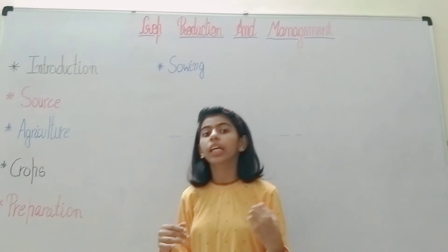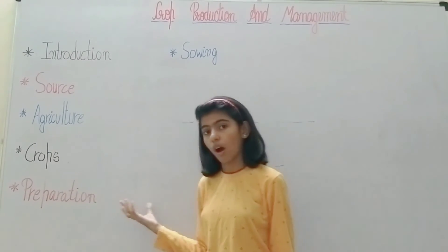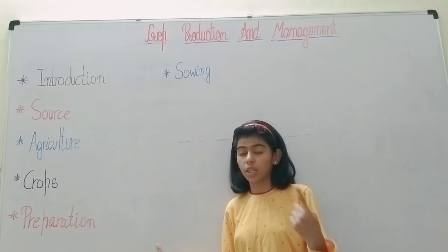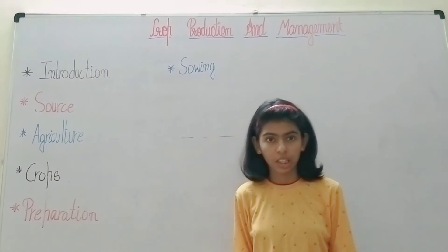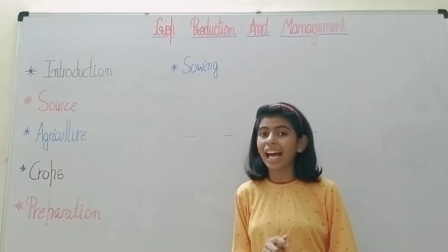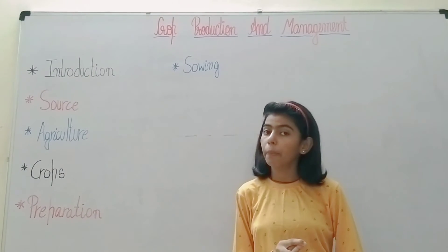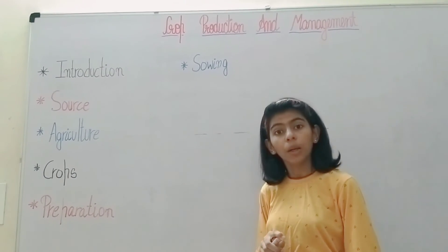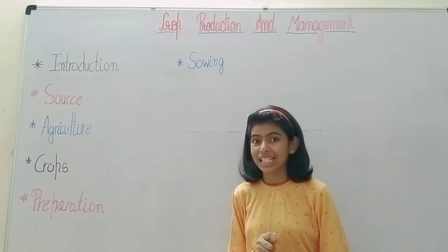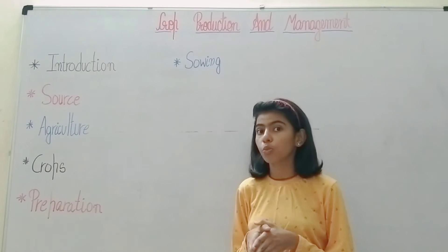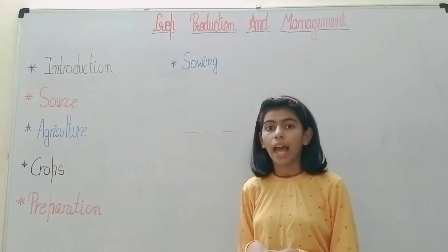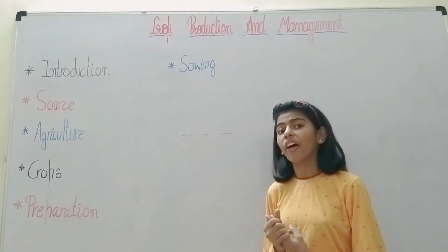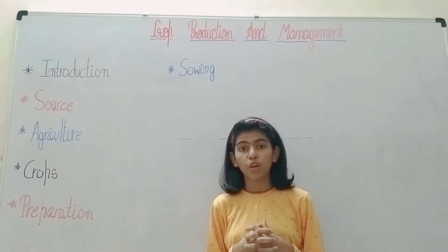The first step is preparation of soil, which includes plowing or tilling, and leveling. The loosening of soil is known as plowing or tilling, done by a plow made of iron or wood. Plowing loosens the soil, helps plant roots penetrate deeper, and equally distributes nutrition over the soil.